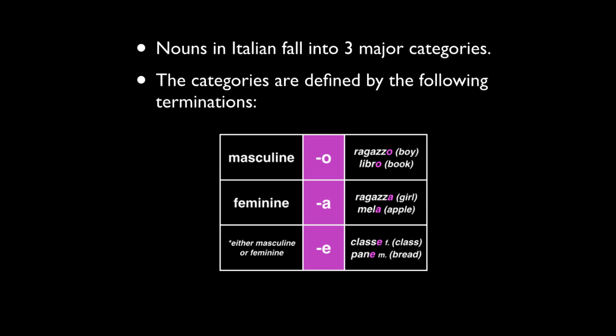That said, nouns in Italian fall into three major categories, defined by the following terminations. If the word is masculine, like ragazzo or libro, you have an -o ending. That simple. If it's a feminine word, it's going to end in -a, like ragazza or mella. And then, to add a slight element of confusion to people who are unfamiliar with Italian, there's a class of nouns that end in -e, such as classe, pane, or cane. These can be either masculine or feminine, and they are very common — as common as the words ending in -o and -a.